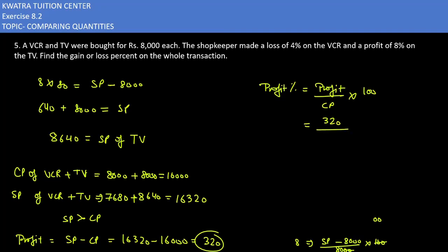Cost price is 16,000 into 100. Two zeros to two zeros cancel, one zero to one zero cancel, and 32 and 16 divide, how much? 2%.